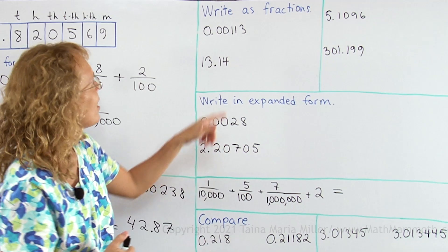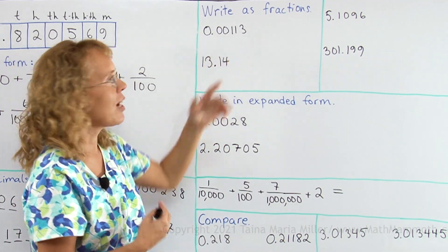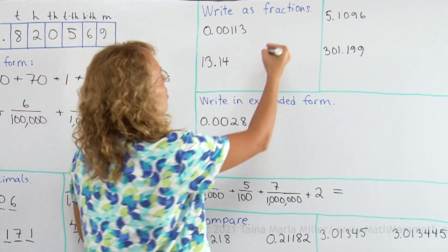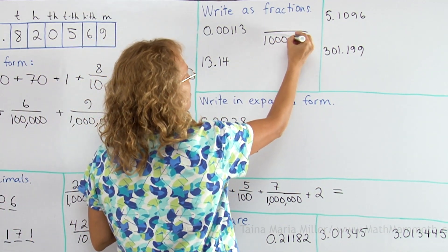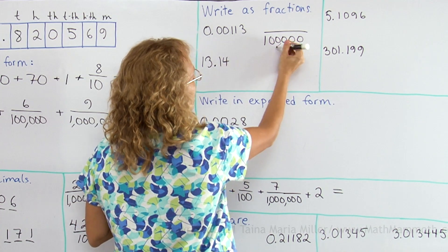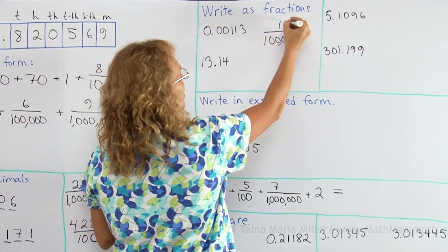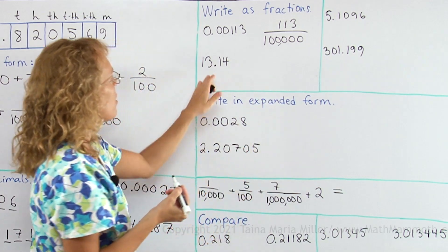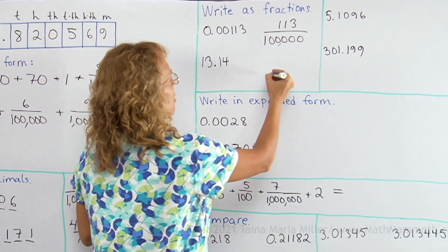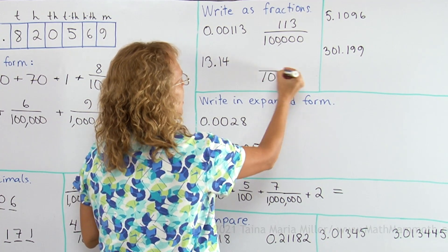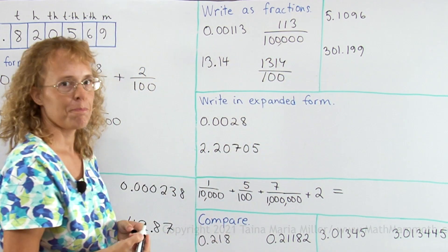Thirteen point one four — two decimal digits, so the denominator has to be one hundred. Then just copy all the digits on top. It's very easy.